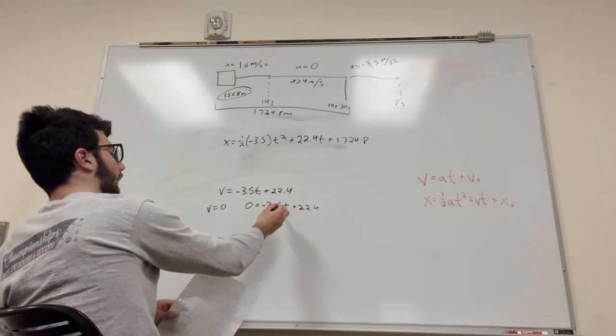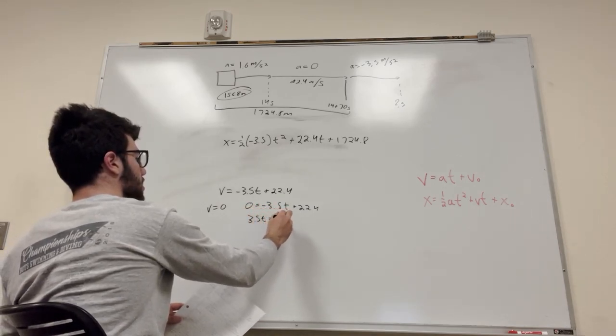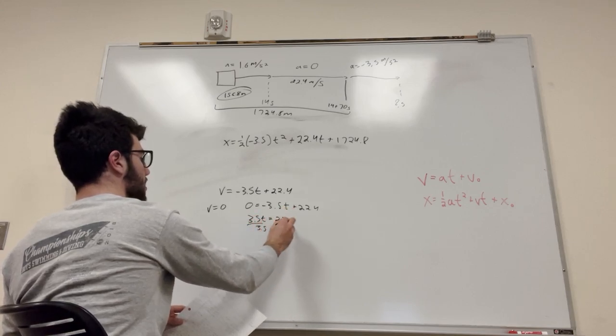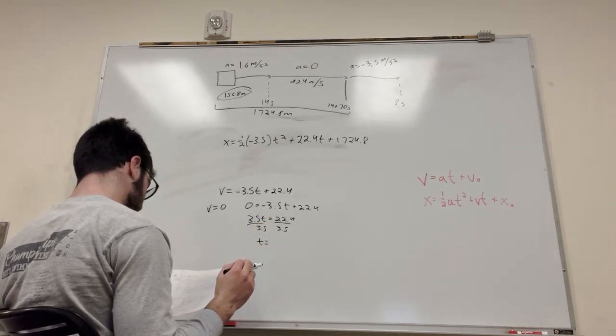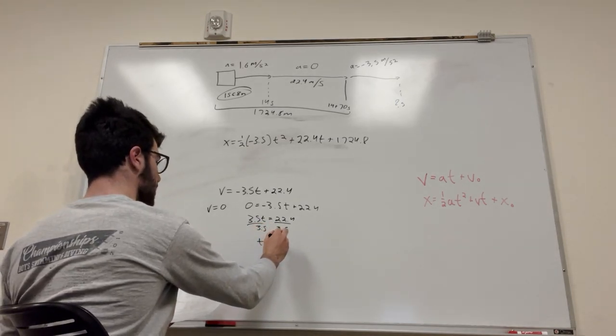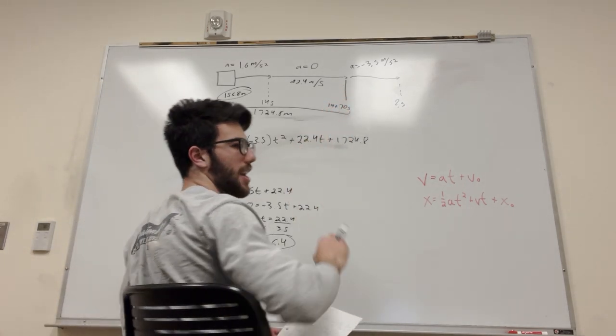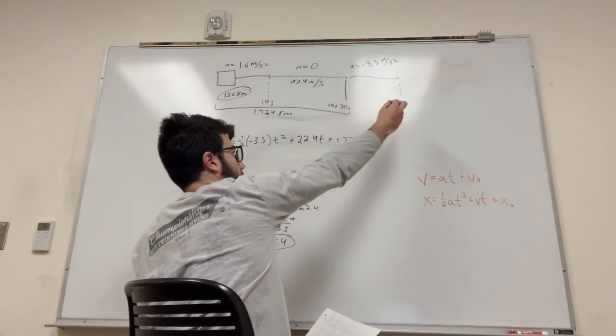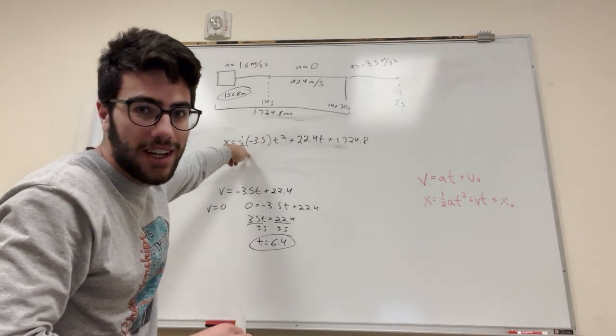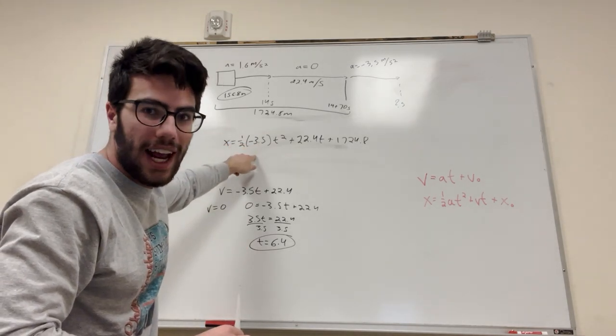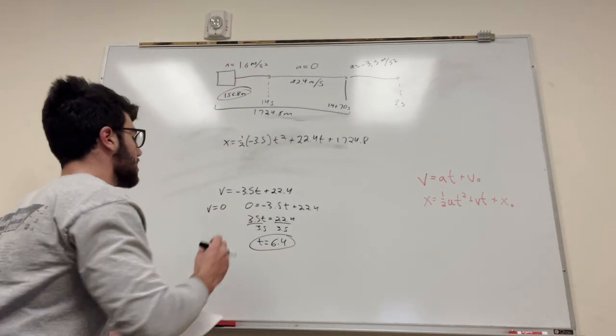Then you can add the 3.5 t to the other side. And then simply divide by 3.5 to get t is equal to 6.4. Okay, so t is equal to 6.4. So, once it hits this section here after 84 seconds, it takes 6.4 seconds for it to come to a complete stop. So, what that means is we can plug in 6.4 into this equation for t to get how much distance it covers during this deceleration period until it comes to a stop. So, let's do that.